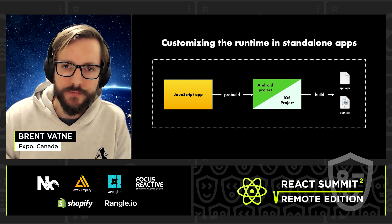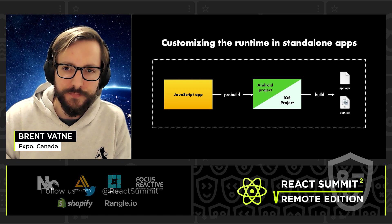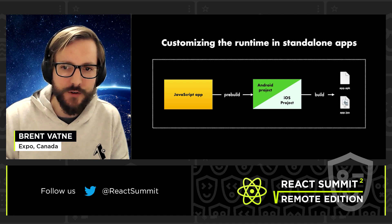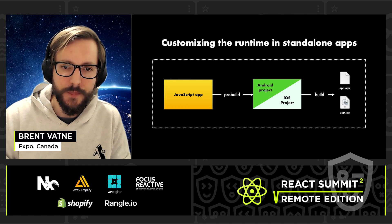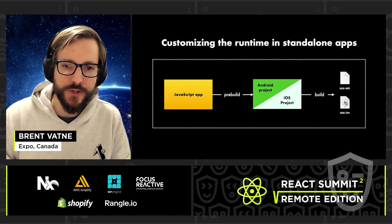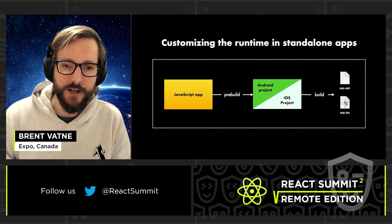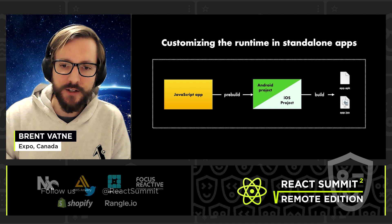Let's start with standalone apps. We need a cloud build service capable of building projects with arbitrary native code — this sounds like a job for EAS Build. We can repurpose the eject command to generate and configure the native iOS and Android projects based on the JavaScript app. We'll call this new command pre-build. On EAS Build, we run pre-build and then build the resulting project like any React Native app — no shell apps. Developers can remove libraries they're not using because pre-build only links and configures libraries that are installed in the project.